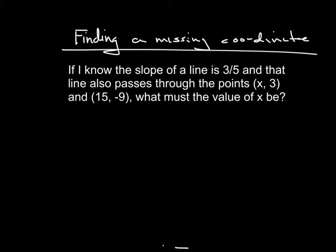If I know the slope of a line is three-fifths, and that line also passes through the points (x, 3) — where x is the unknown coordinate — and (15, -9), what must the value of x be?